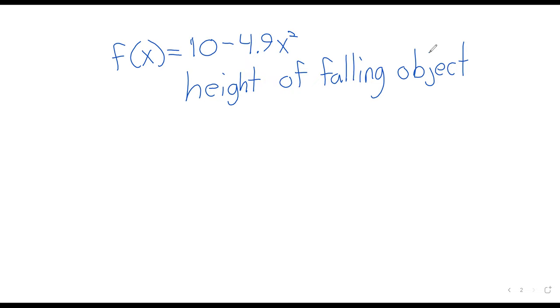And the rate that the height is changing at is the object's velocity. Well, we know that the velocity of a falling object isn't constant because falling objects accelerate. So this function does not have a constant rate of change.